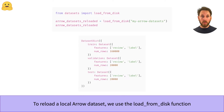When we want to reload the Arrow datasets, we use the load_from_disk function. We simply pass the path of our dataset directory and the original dataset is recovered.